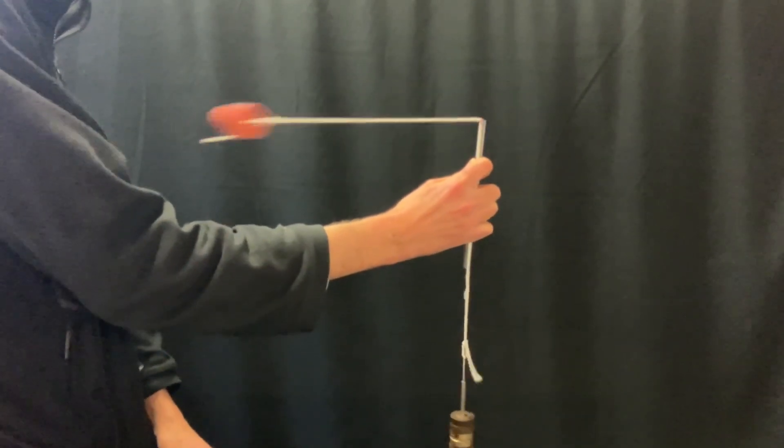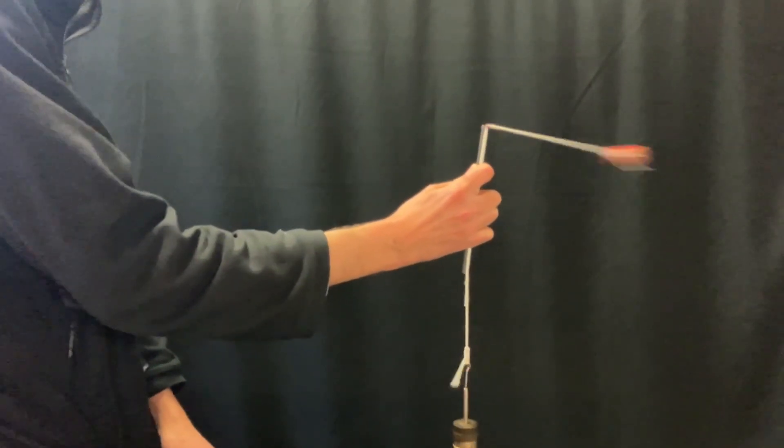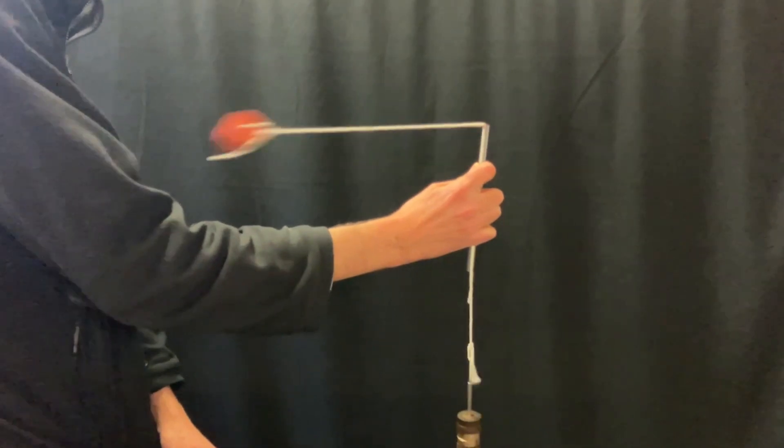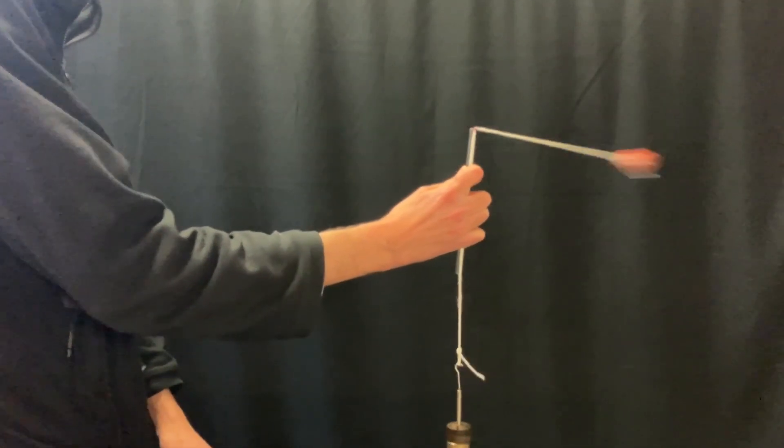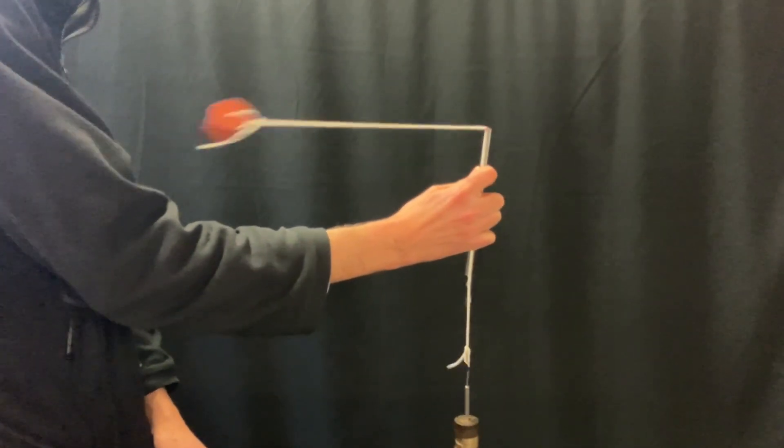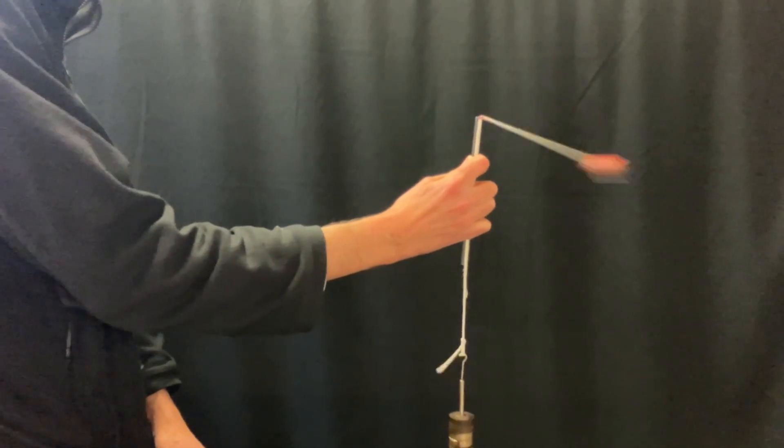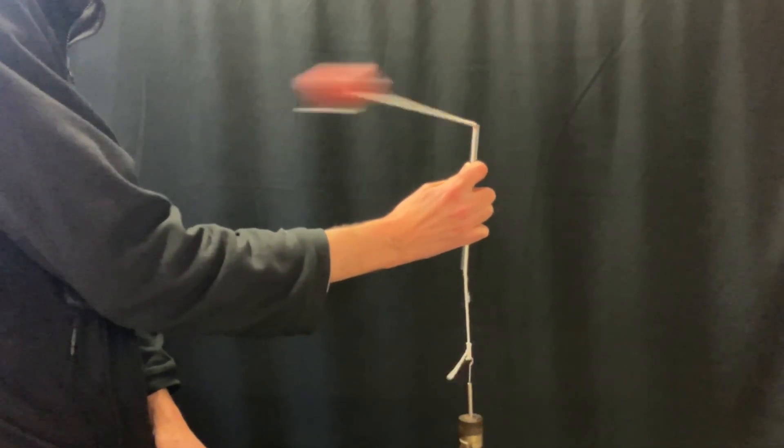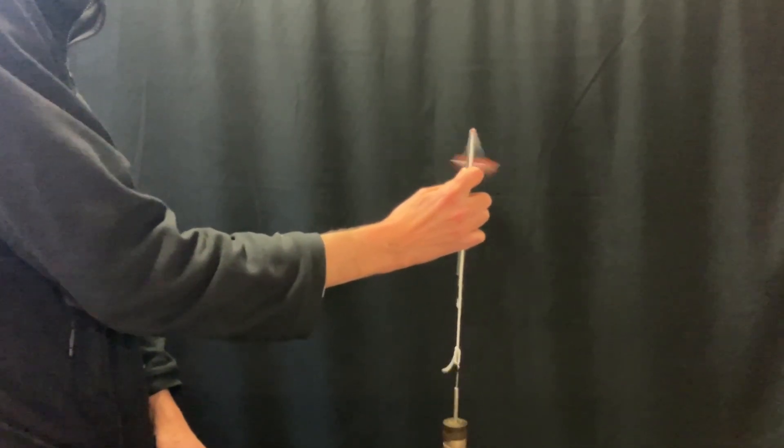In this experiment you aim to twirl a bung round in horizontal circles of fixed radius. The weight of the masses hanging on the end provides a tension in the string which then provides a centripetal force to cause the circular motion.